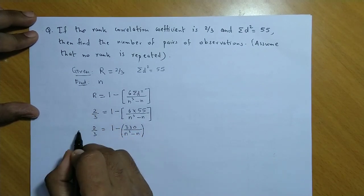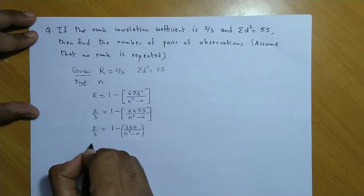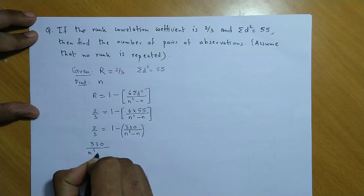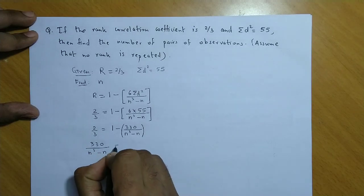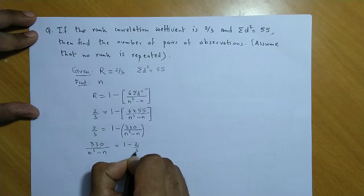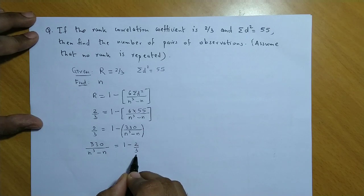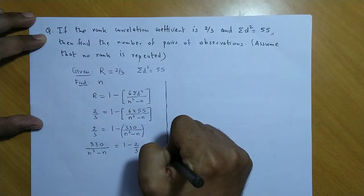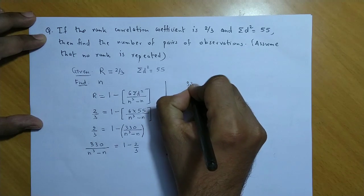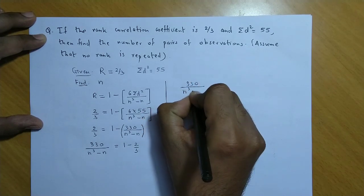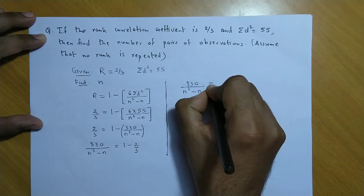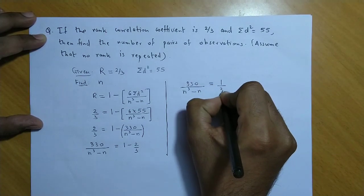Ab ye term hum agar left mein le aate hai, toh ye negative ho jayega positive. So, we get 330 upon n cube minus n equal to 1 minus 2/3. Now, 1 minus 2/3 hota hai 1/3. So, 1/3 on the right hand side.